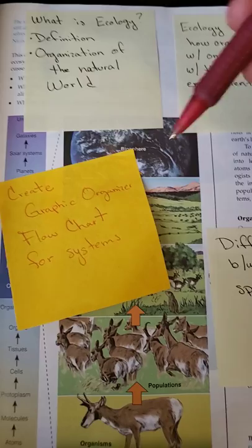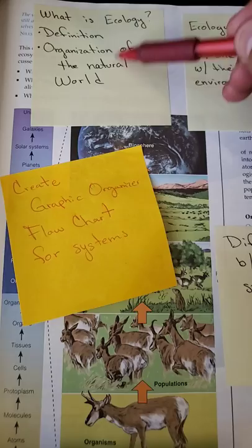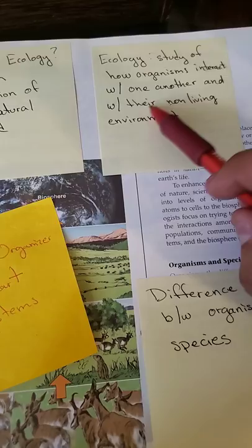All right, this will be the first one for Unit 1, looking at ecosystems — what they are, what they do, etc. Let's start with the first thing: what is ecology? You'll need the definition and the organization of the natural world, found on page 51. Ecology is the study of how organisms interact with one another and with their non-living environments.